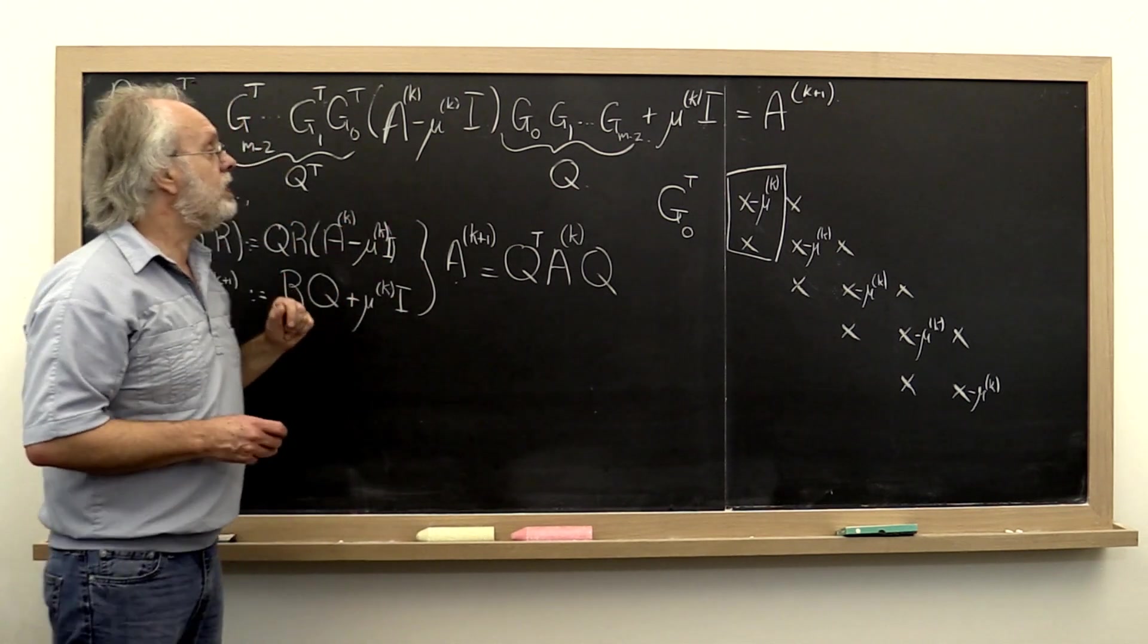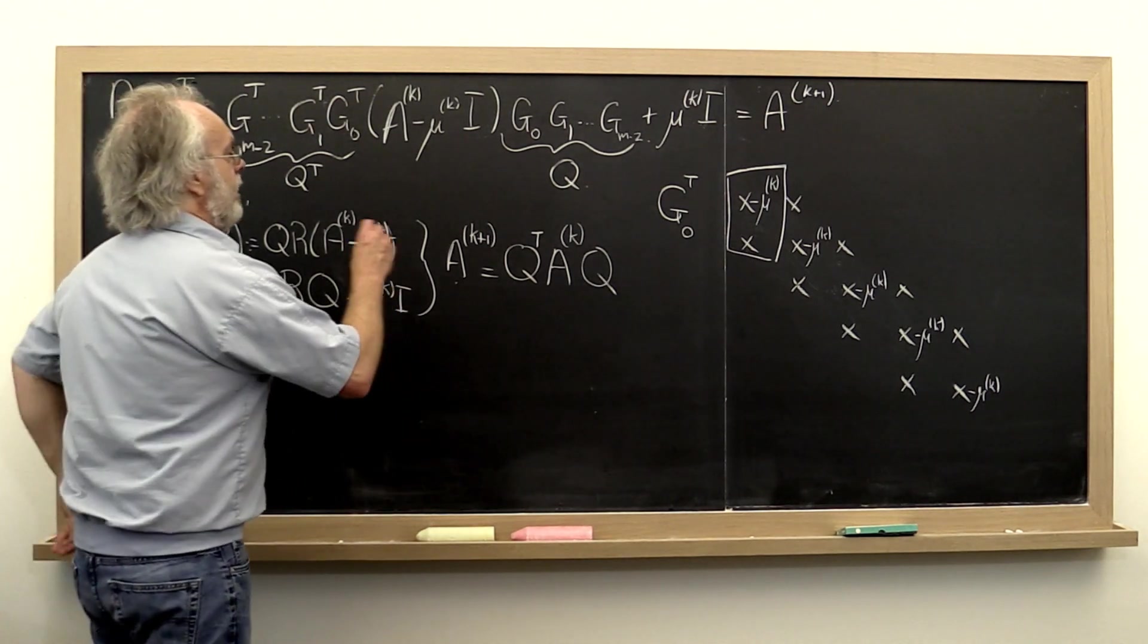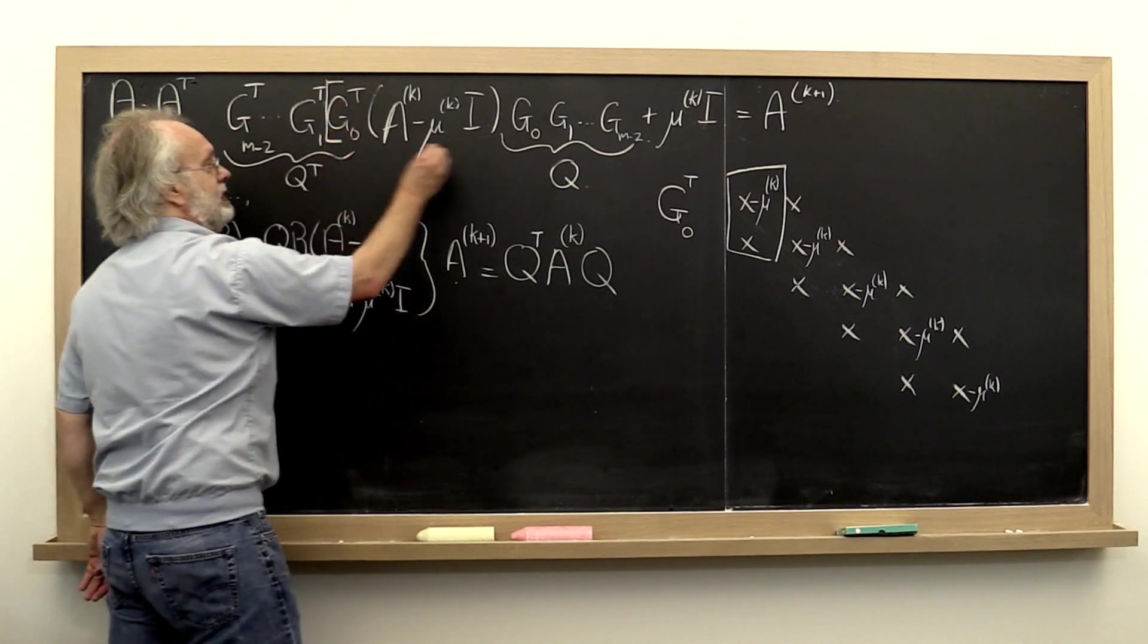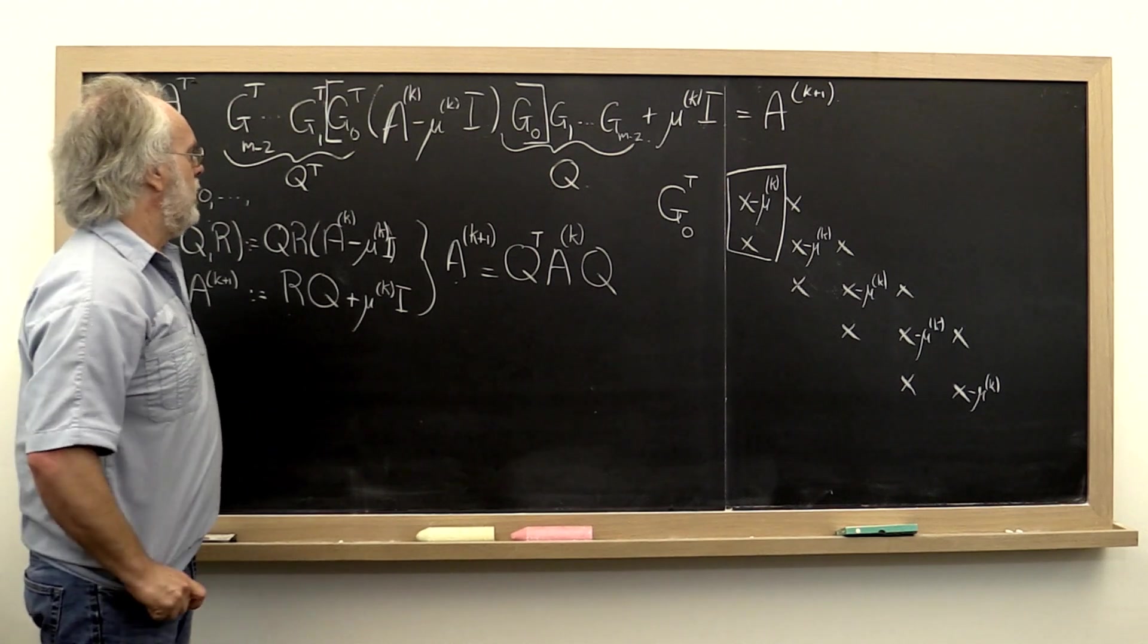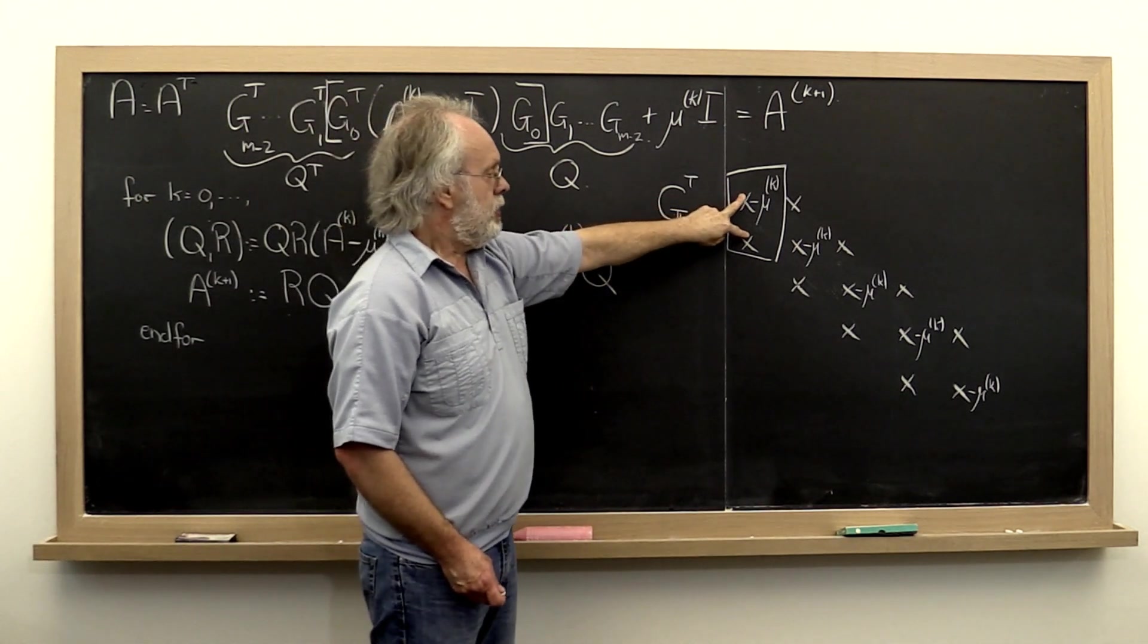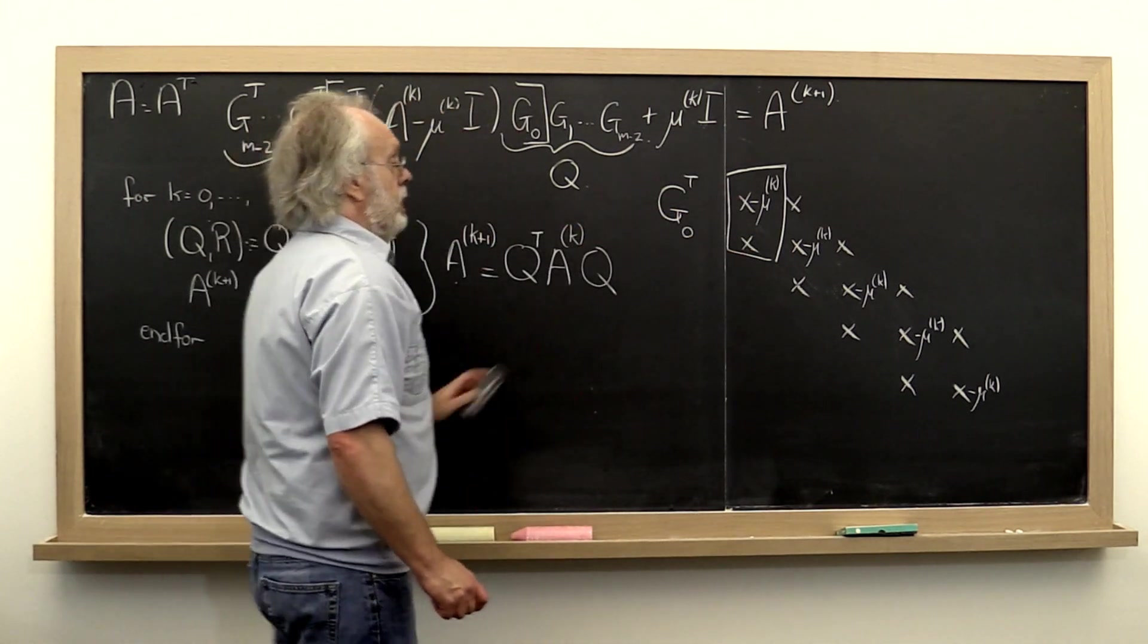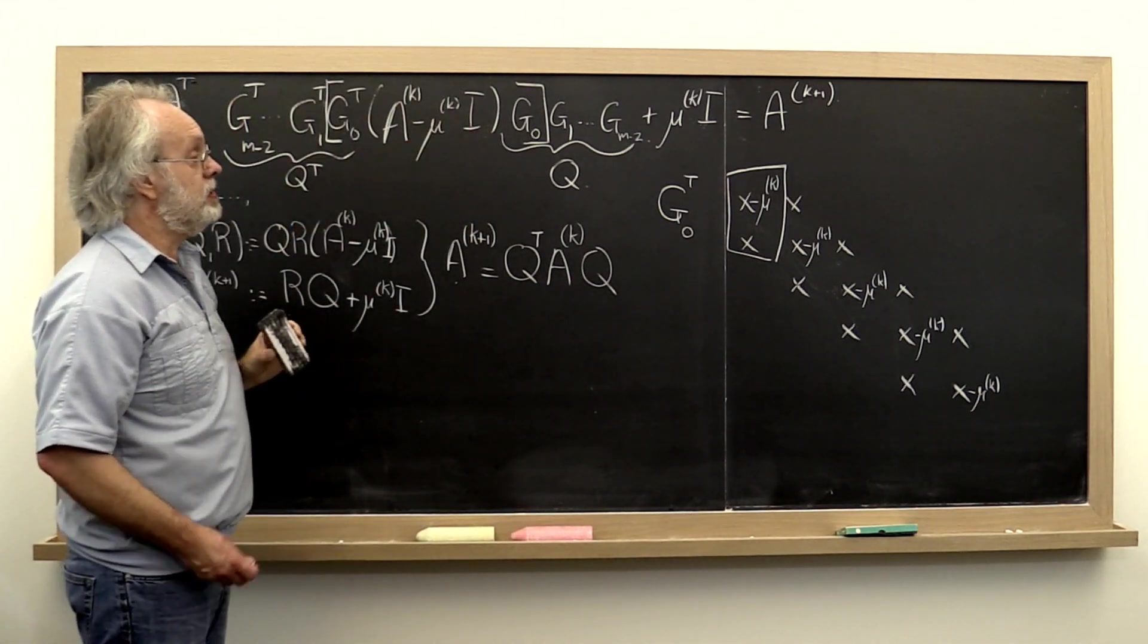Now what does that mean? Well, what it means is that we can compute this part first. We can compute a G0 such that a zero is introduced right here. Remember, at that point, instead of applying it to our shifted matrix, we can say we have our current iterant.